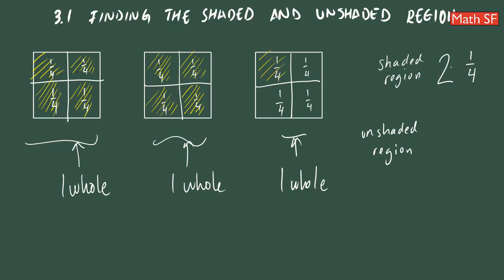What about the unshaded region? Remember that each of them represents one fourth. So how many shaded parts do we have? One, two, three. So three fourths.